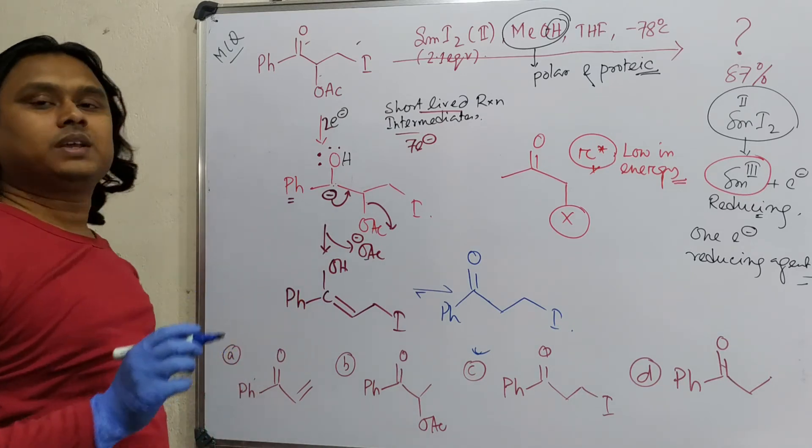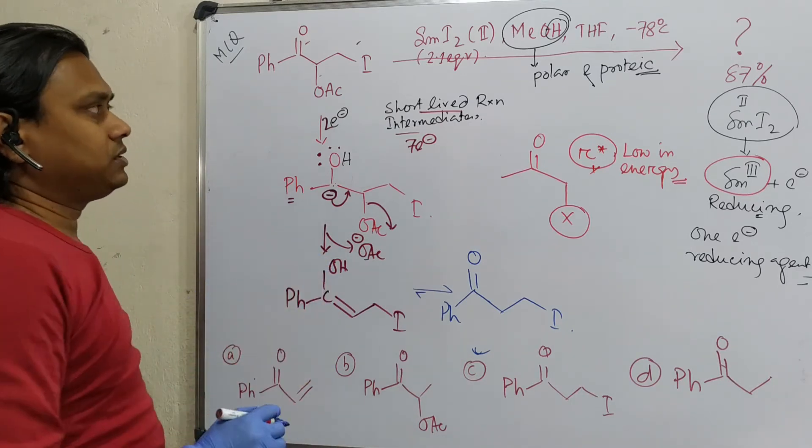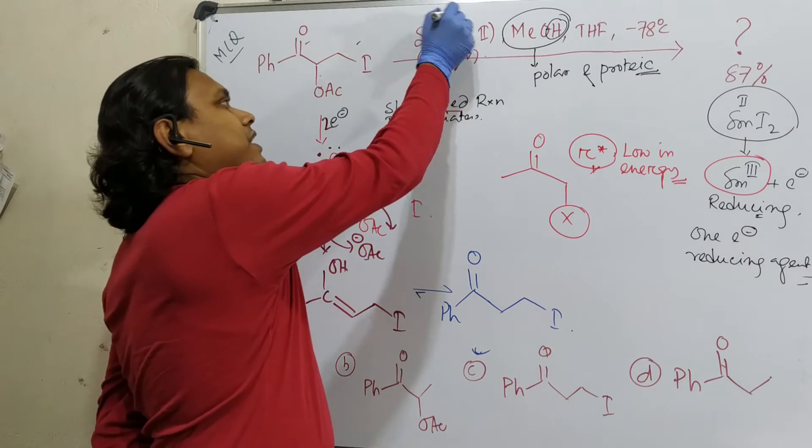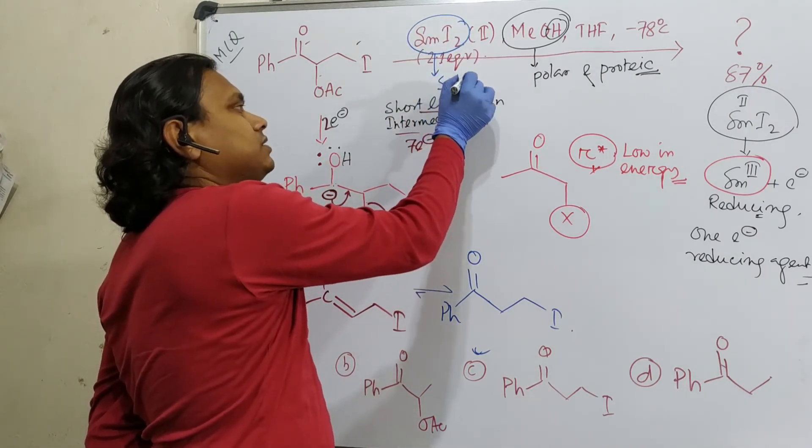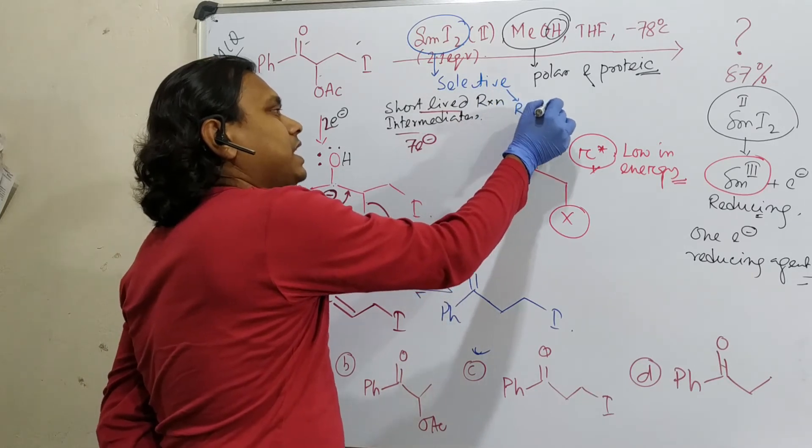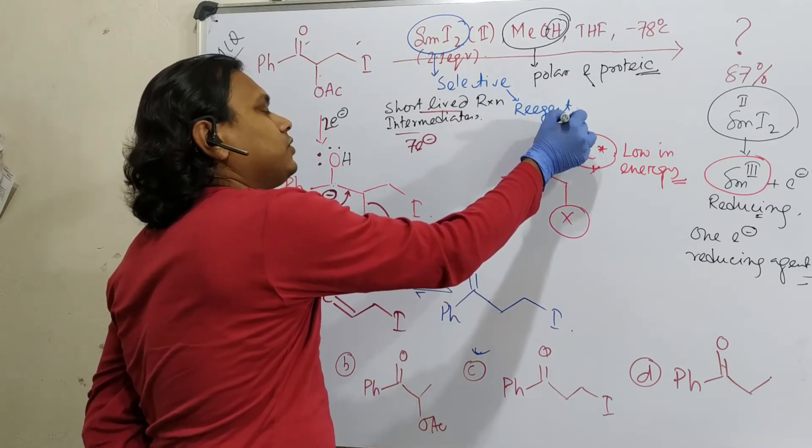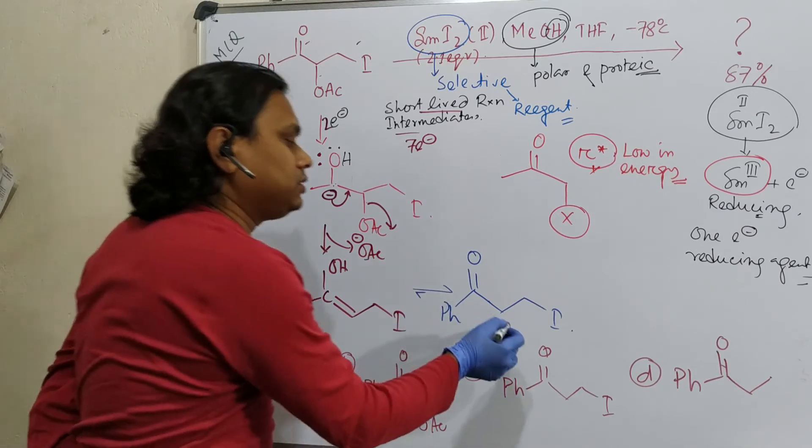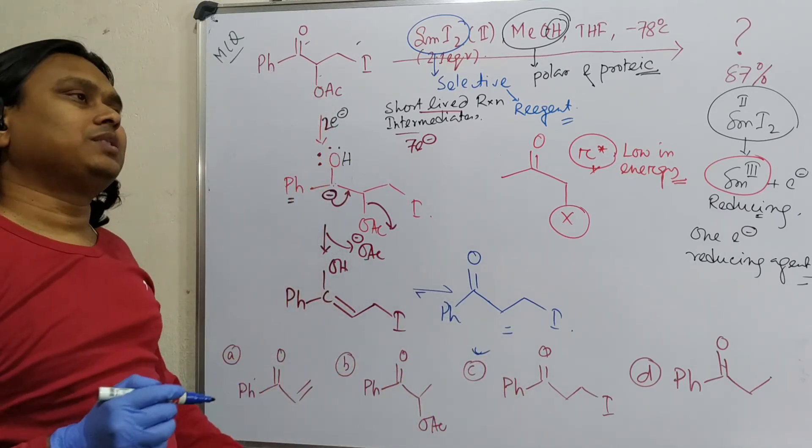Now, which lesson? How much lesson we are getting from this discussion? That see, this samarium iodide is a very selective reagent. So actually, it's a selective reagent. And that's why it's used extensively in organic chemistry. And you can see this.